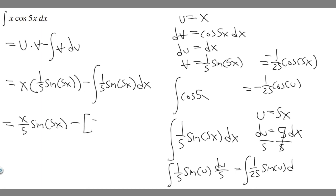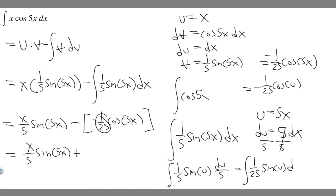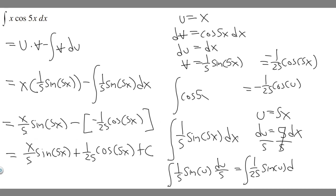Plugging this back in, we had minus that integral, so minus minus becomes positive. Our expression is x over 5 times the sine of 5x plus 1 over 25 times the cosine of 5x. And don't forget, whenever you take an integral you have to add plus C. So your final answer is x over 5 times the sine of 5x plus 1 over 25 times the cosine of 5x plus C. Hopefully you found this useful.